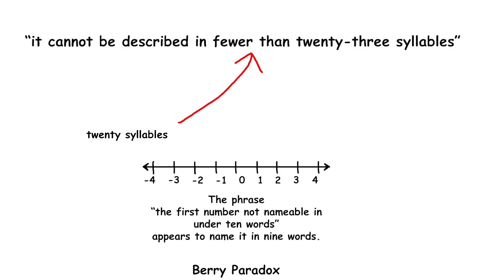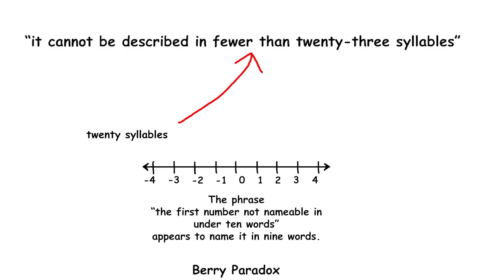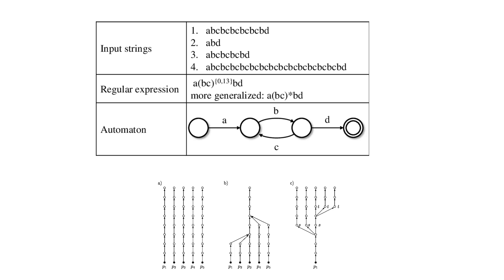Berry's paradox extends beyond mere wordplay. It has implications in fields like algorithmic information theory. Specifically, it suggests limits on the ability to compute the Kolmogorov complexity of a string in general.